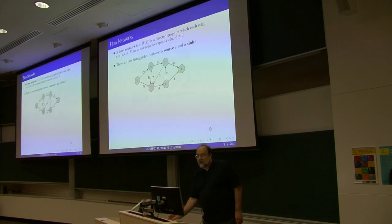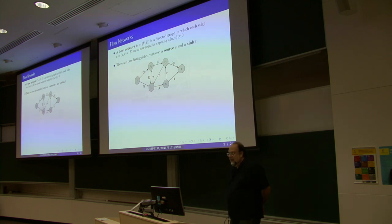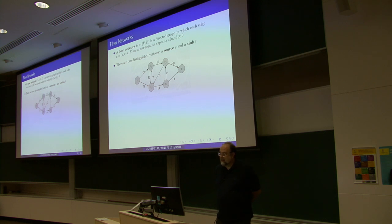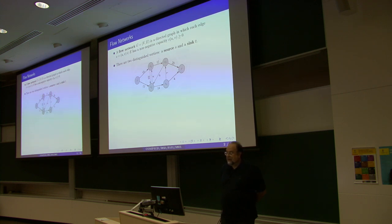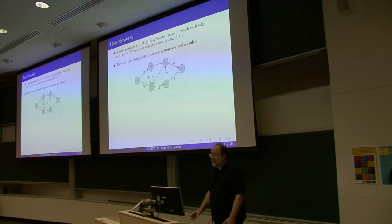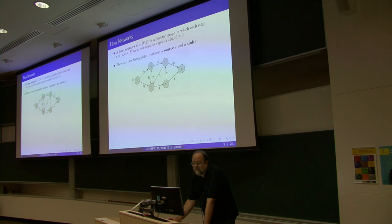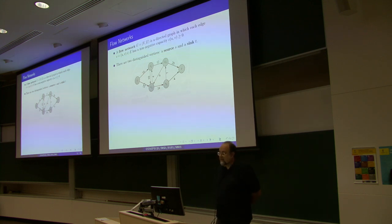So what is a flow network? A flow network is essentially a weighted directed graph whose intended purpose is to model several types of practical problems. It's a directed graph in which each edge has a weight that is, in this case, called the capacity.